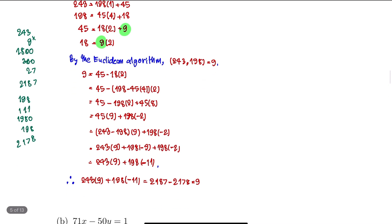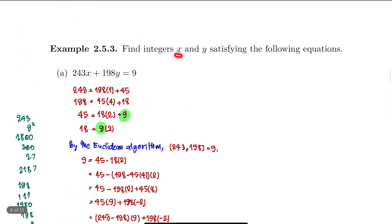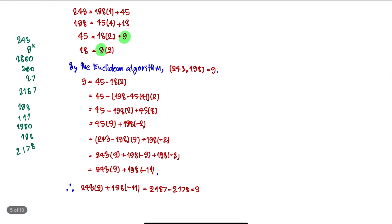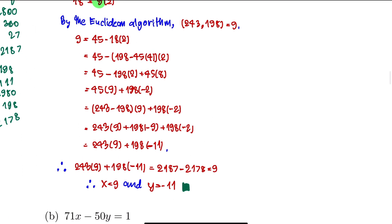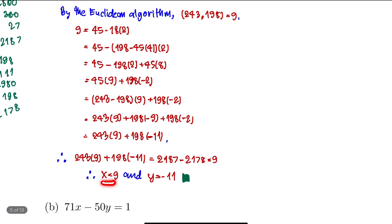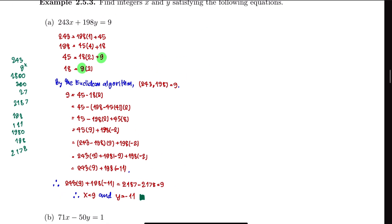So we have X and Y satisfying this equation. Our X is 9 and Y is negative 11. You might find other integer solutions beyond these, but X equals 9 and Y equals negative 11 is the solution found here. And that's it for this video.